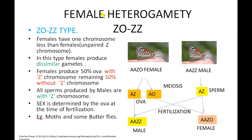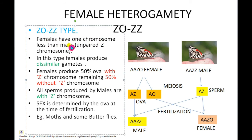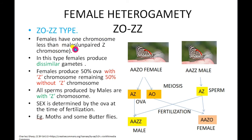In female heterogamity, females have dissimilar or different chromosomes while males have the same or similar chromosomes. This type is also of two types: ZO/ZZ type and ZW/ZZ type. The ZO/ZZ type of sex determination occurs in some moths and butterflies, where females have one chromosome less than the males because the sex chromosomes are not paired — they are single.